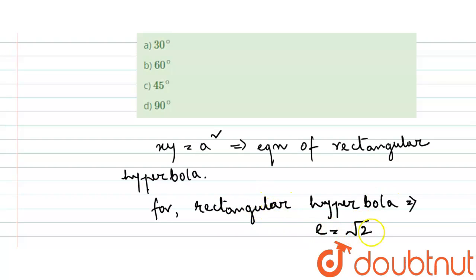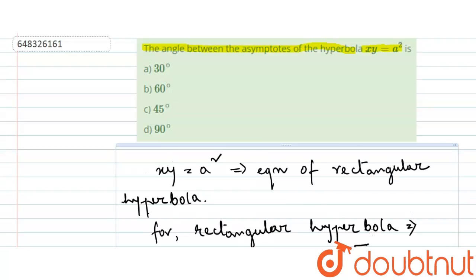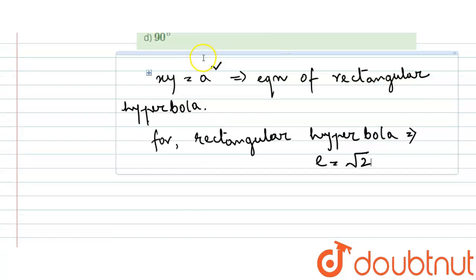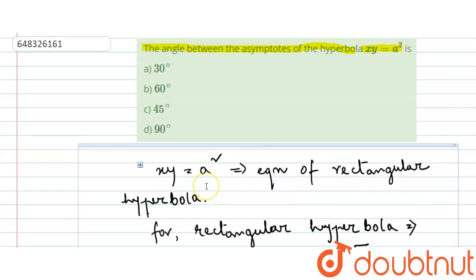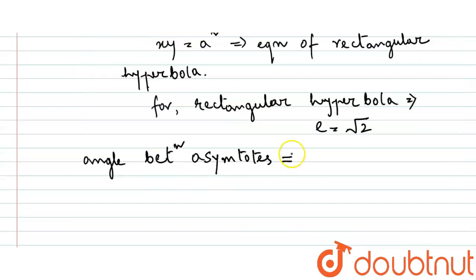e is equal to root 2, that is known. So we have to find the angle between asymptotes. The angle between asymptotes will be, the formula is 2 sec inverse e.